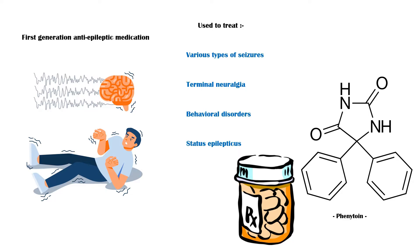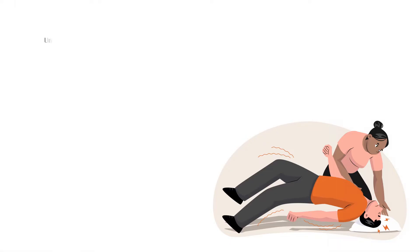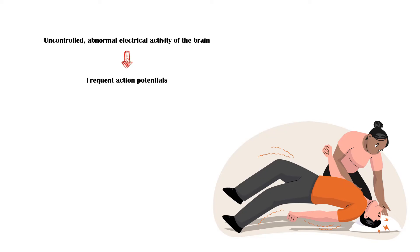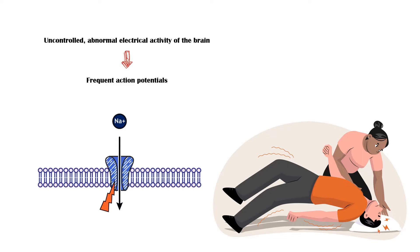A seizure is a condition where there is uncontrolled, abnormal electrical activity of the brain, causing neurons to fire action potentials more frequently. Voltage-gated membrane sodium channels of the neurons are responsible for this increased firing of nerve signals. Phenytoin works by blocking these voltage-gated sodium channels, reducing the frequency of nerve signals.